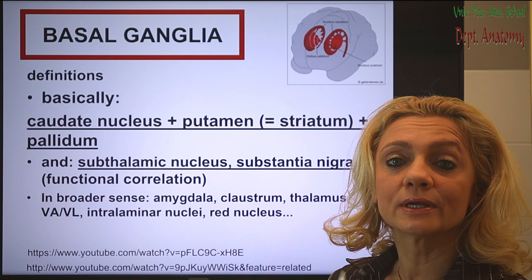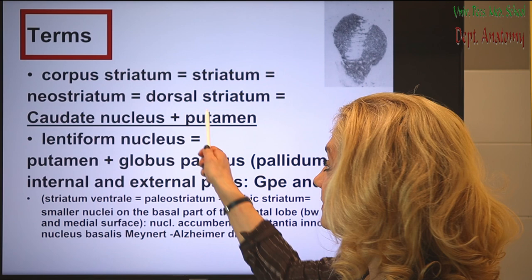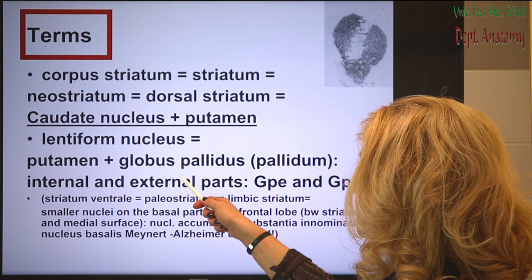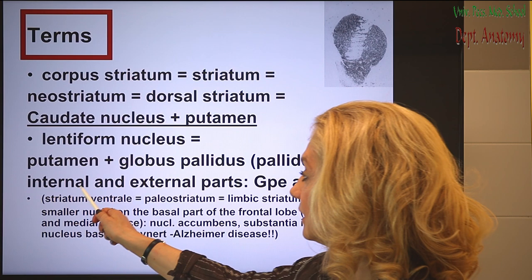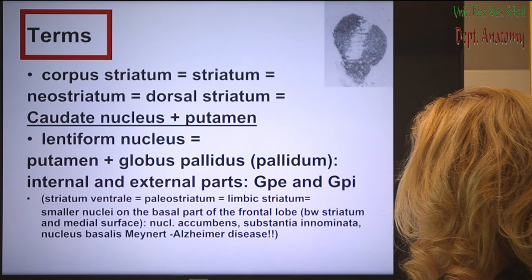In a broader sense, there are several other nuclei you can list as basal ganglia, but we are not going to deal with those today. The term striatum refers to the caudate nucleus and putamen together. You also have the lentiform nucleus, which is composed of the putamen and the pallidum, which has an internal and external part, abbreviated as GPE and GPI.